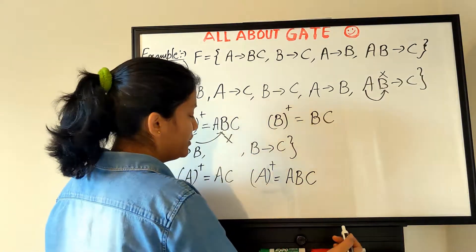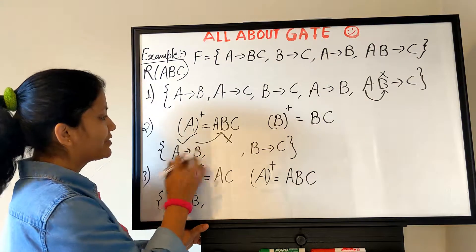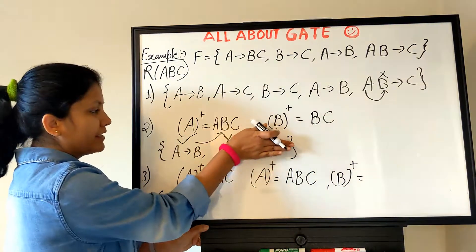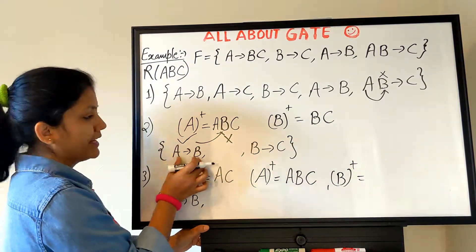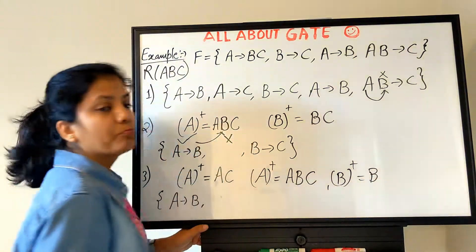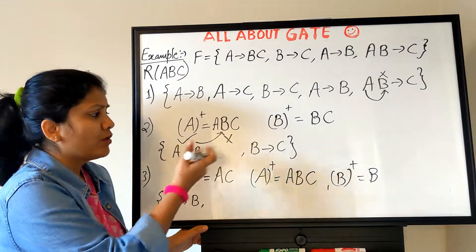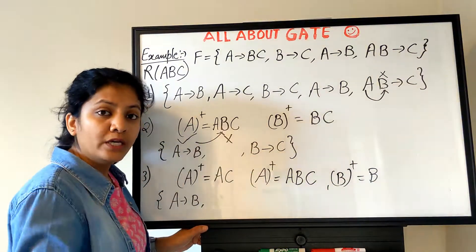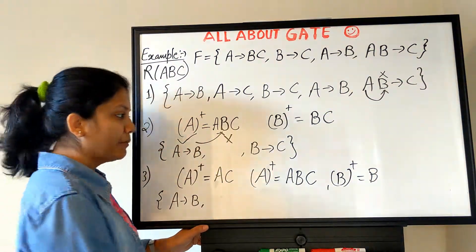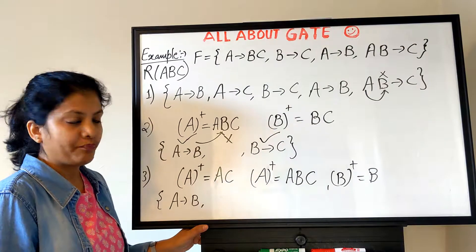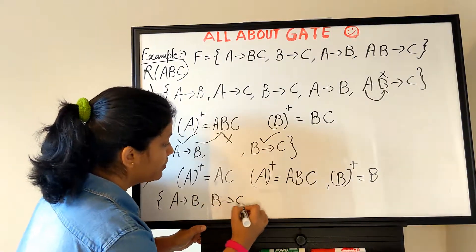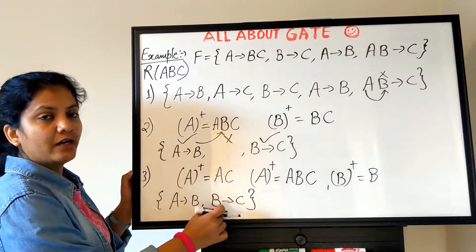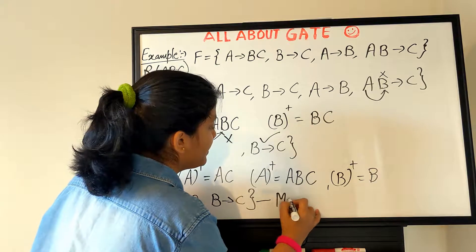Now let's check B→C. Remove it and find B⁺. With only A→B remaining, B⁺ gives us only B — there is no FD derived from B anymore. So we are losing the meaning of B→C, which means it is essential and must be included. The final FD set becomes A→B and B→C. This is your minimal cover.